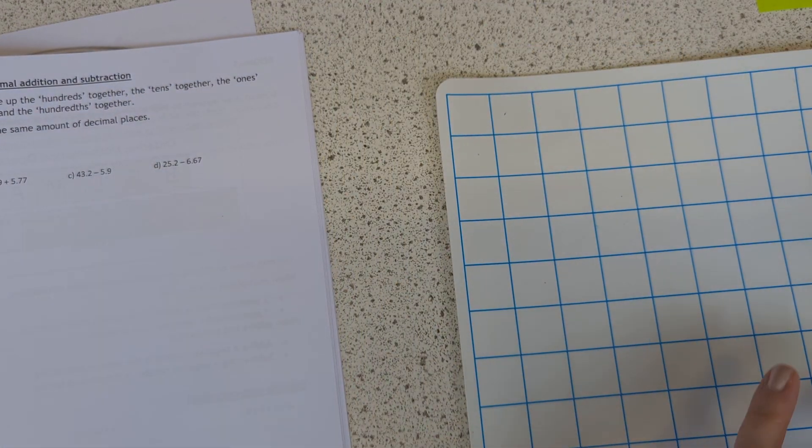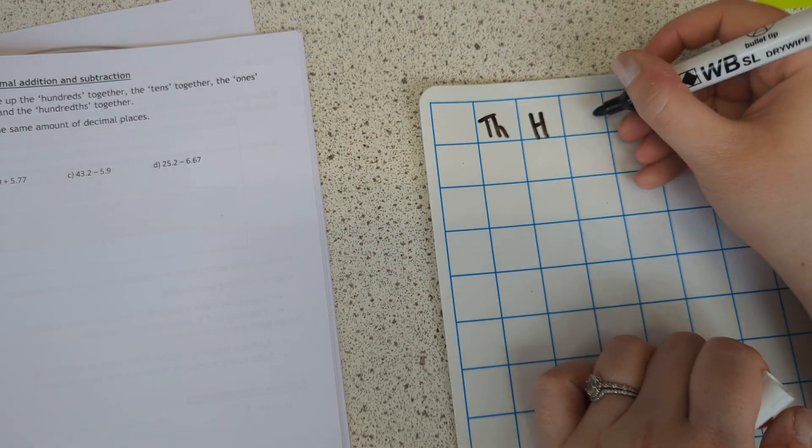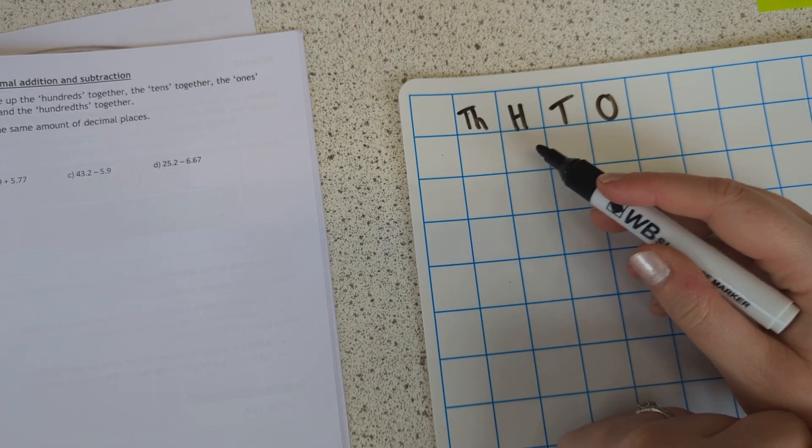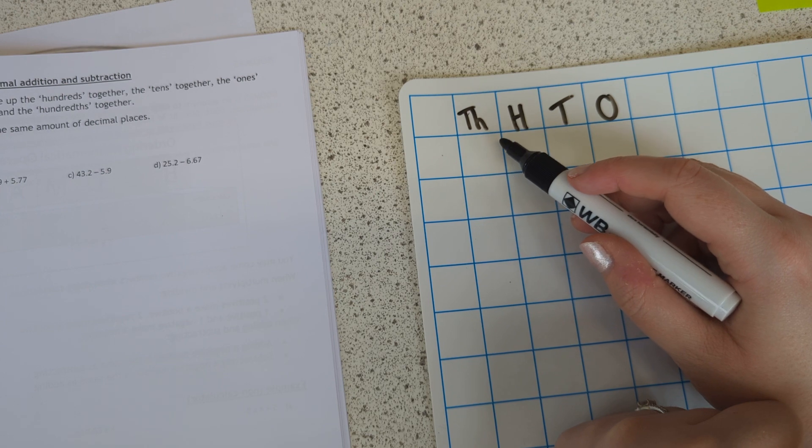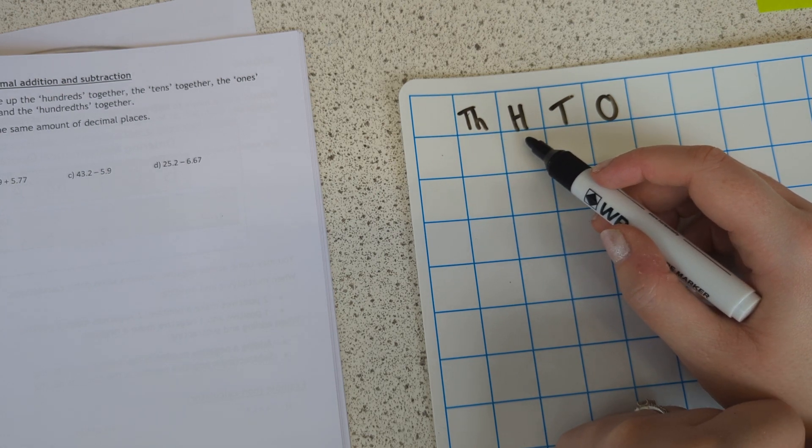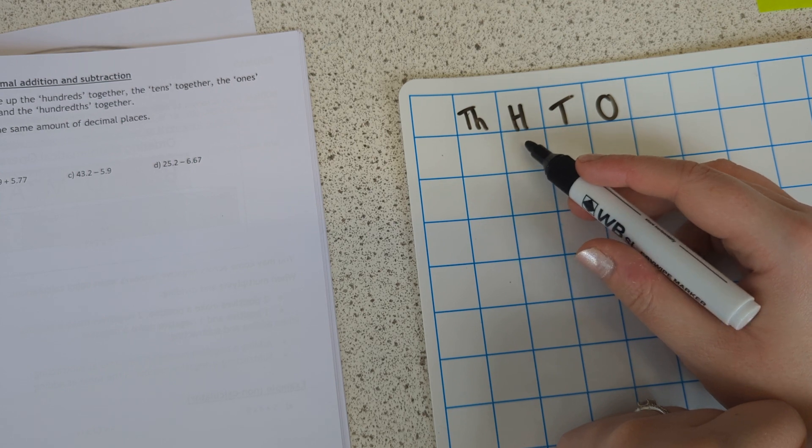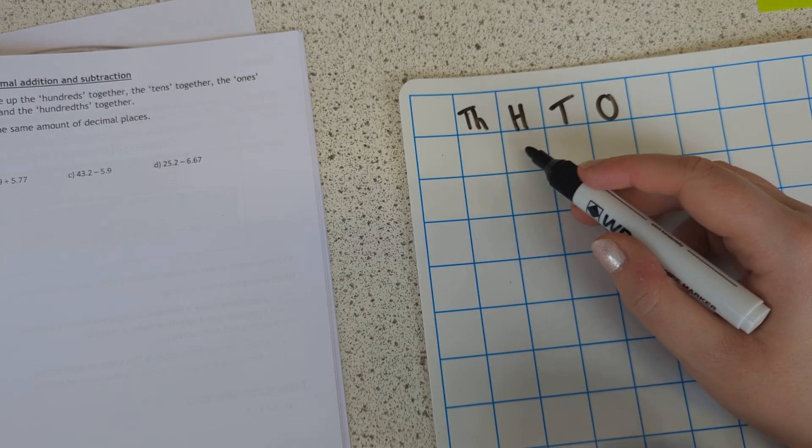So obviously we are used to our thousands column, our hundreds column, our tens column, our ones column. And we should be able to see that 100 is a tenth of a thousand, because there's ten one hundreds in a thousand.